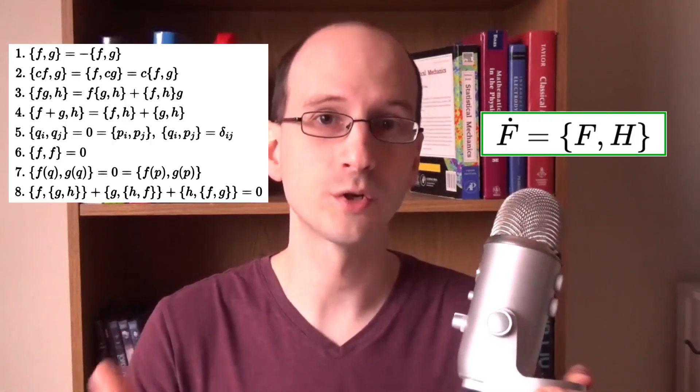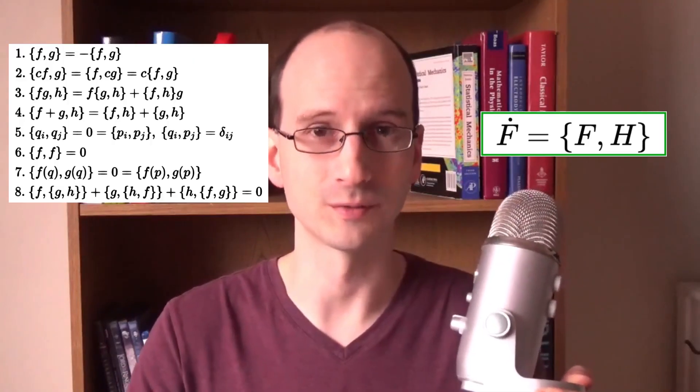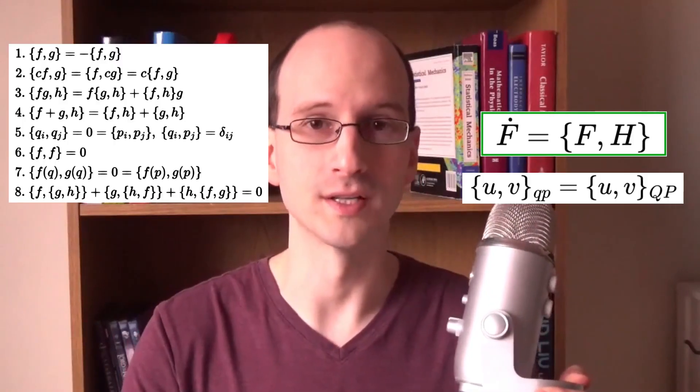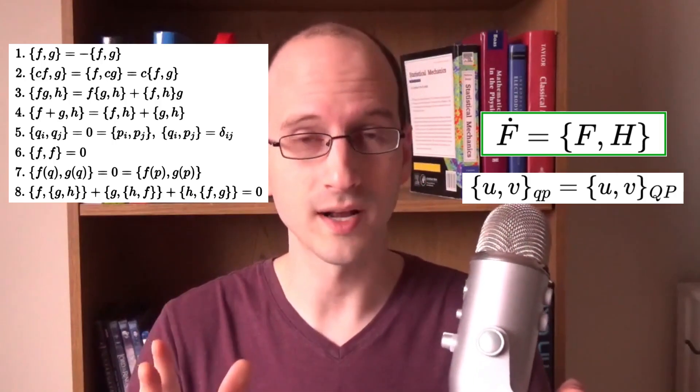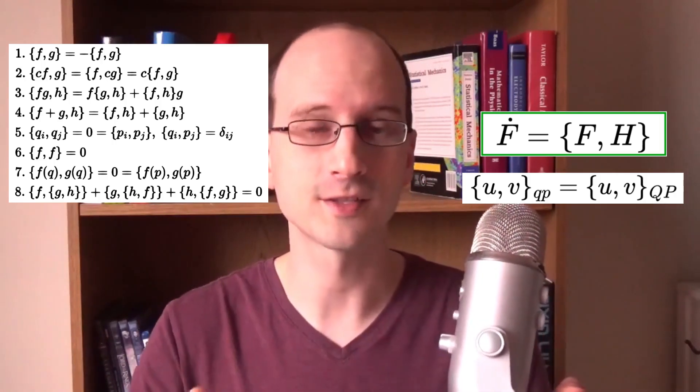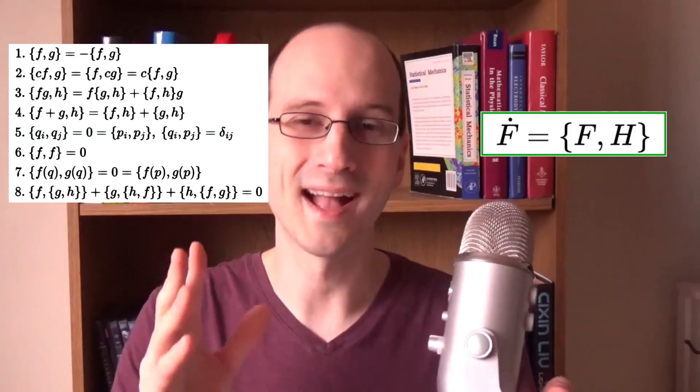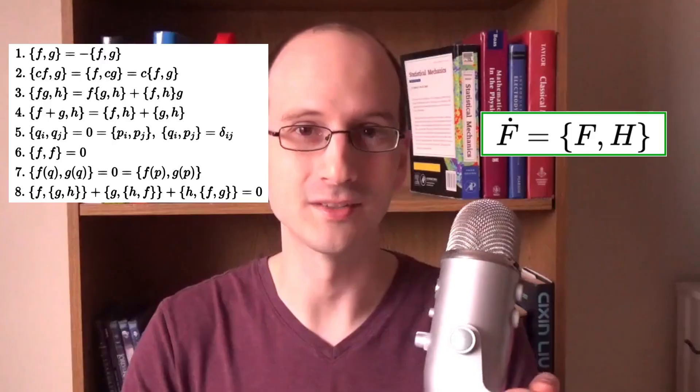Furthermore, they do not depend on which coordinates we use as a basis. That is, which coordinates we take the derivatives with respect to. The Poisson brackets with one set of coordinates is equal to the Poisson bracket in a different set of coordinates. This means Poisson brackets represent objective physical facts. They're not relative. And here's the thing. By using these rules, we can turn advanced physics problems into algebra problems, completely ignoring the fact that there's calculus underneath.